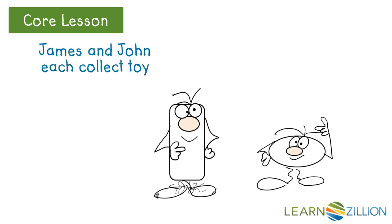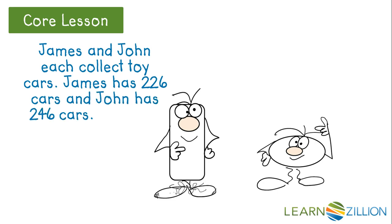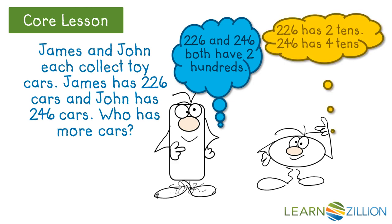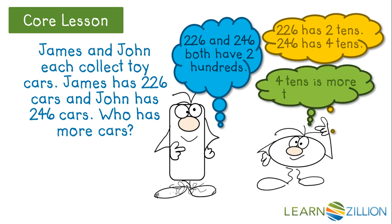James and John each collect toy cars. James has 226 and John 246. Who has more cars? Let's think about what we've learned so far in our lesson. 226 and 246 both have two hundreds. 226 has two tens and 246 has four tens. We know that four tens is more than two tens. 246 is greater than 226. John has more.